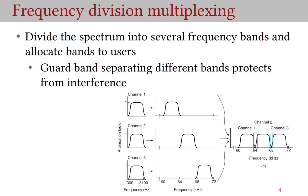The first multiplexing scheme we will discuss is called frequency division multiplexing, or FDM for short. FDM uses passband transmission to share the spectrum. The spectrum is divided into channels of smaller frequency bands, and these channels are allocated to users. Here is an example where we have divided a spectrum of 12 kilohertz into 3 channels. Note that a small frequency band is left unallocated between adjacent channels to protect transmission in each channel from interference from neighboring channels — these are called guard bands. FDM is used in wireless networks.